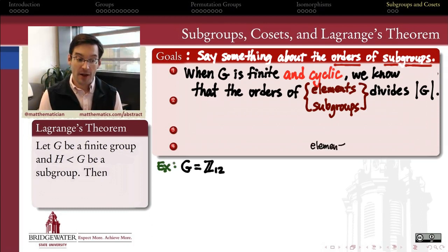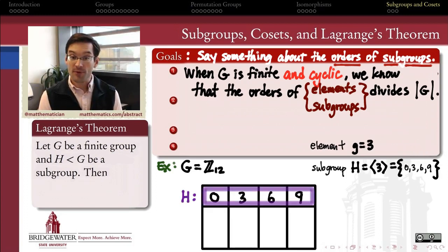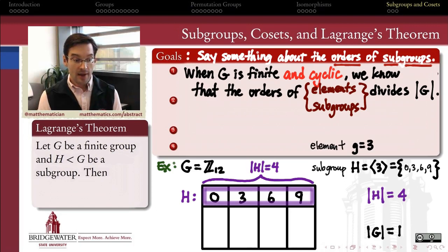If I have a group of order 12 that's cyclic, for example, then we know that that group is actually isomorphic to Z12, the additive group of integers mod 12. If I pick up an element in that group, like the element 3, and I pick up the subgroup that that element generates, the subgroup generated by 3: 0, 3, 6, and 9 mod 12, those elements and subgroups actually have order 4. The subgroup has order 4 because it's got 4 elements in it: 0, 3, 6, and 9.